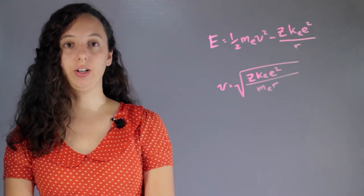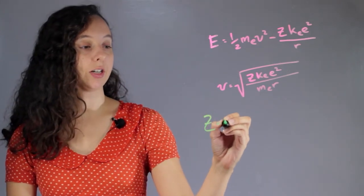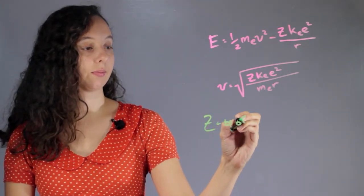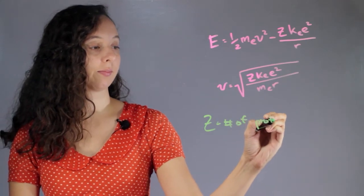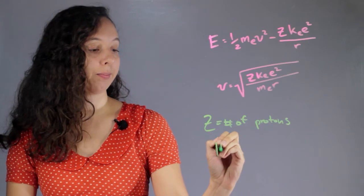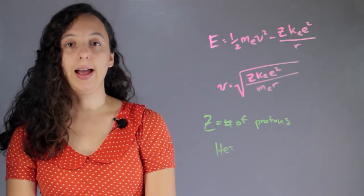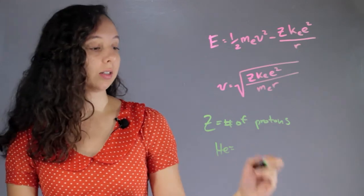Okay, so just a refresher, atomic number z is also equal to the number of protons. So if I have a helium atom, I know that it has two protons, it's the second element on the periodic table, and so it has atomic number two.